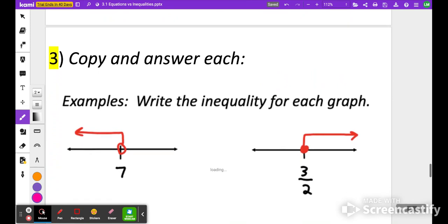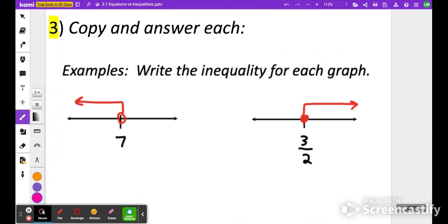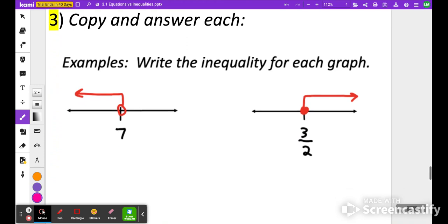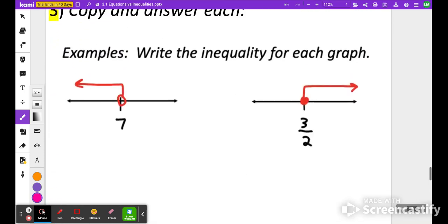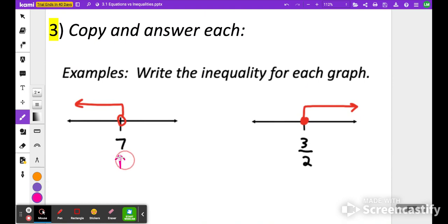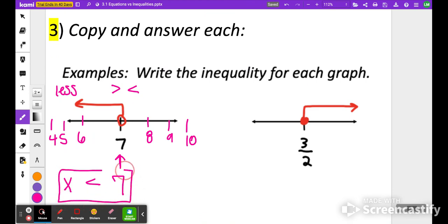Sometimes we will get questions that are already graphed for us, and when we get those, we just want to write the inequality represented. The nice thing here is that when we're writing this inequality, it's actually very simple. I know my focus number is 7, so I'm going to have x is something, then 7. If you think about your number line, 0 would be this way, so you could think like 6, 5, 4, and then here would be 8, 9, 10. We notice that we have an open circle, so that means it's either going to be greater than or less than, and if we're pointing to the left, things are getting less. We're pointing to things that are less than 7, so my inequality should be x is less than 7.